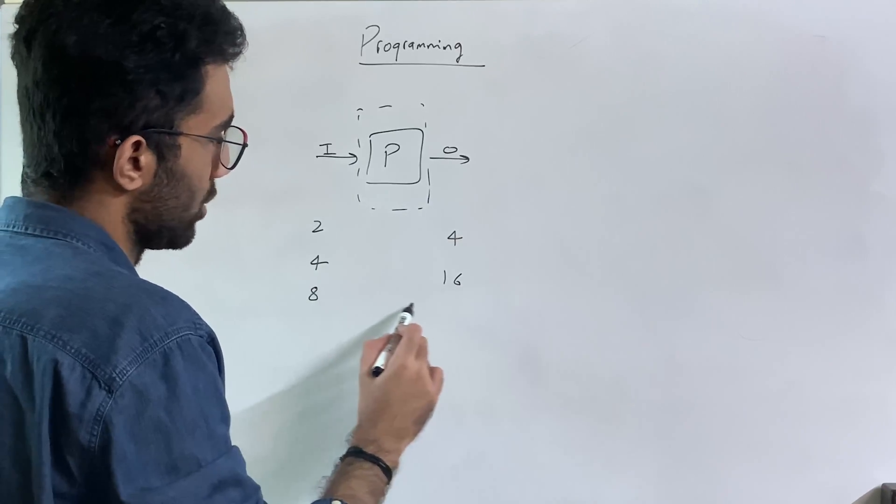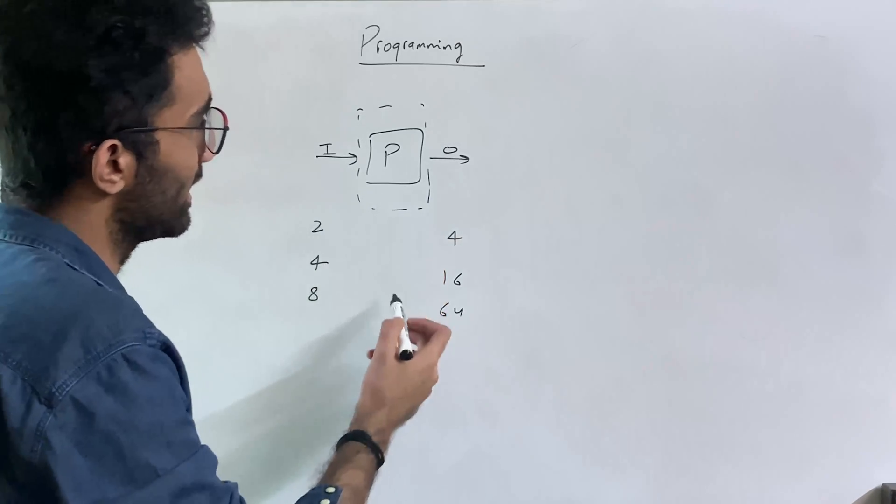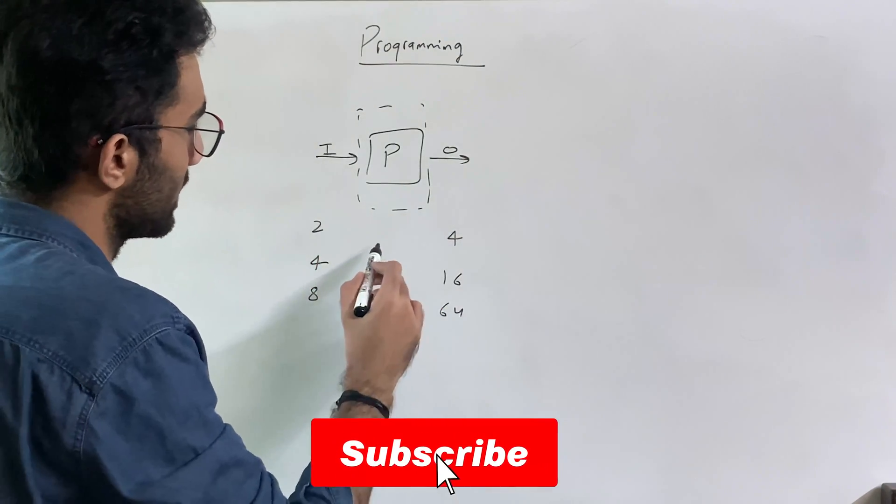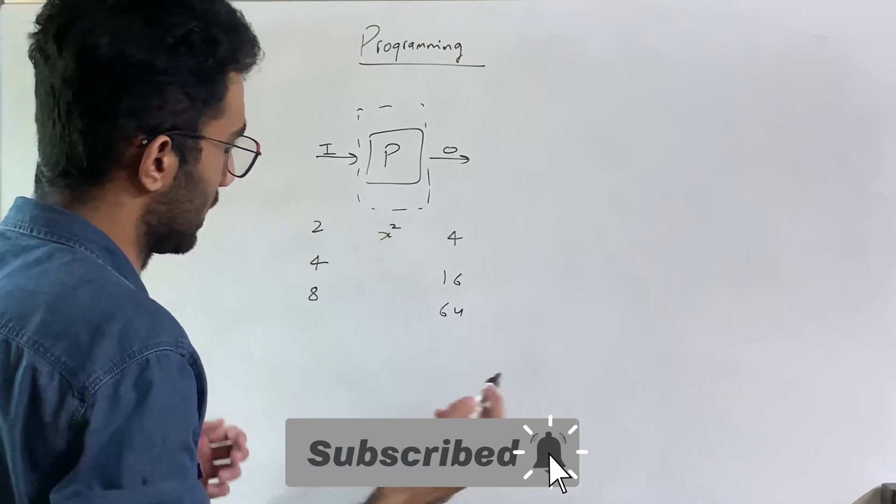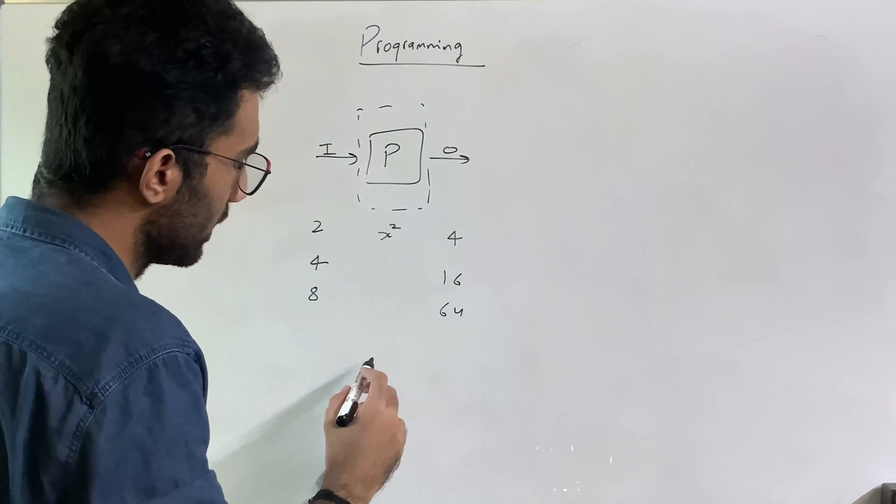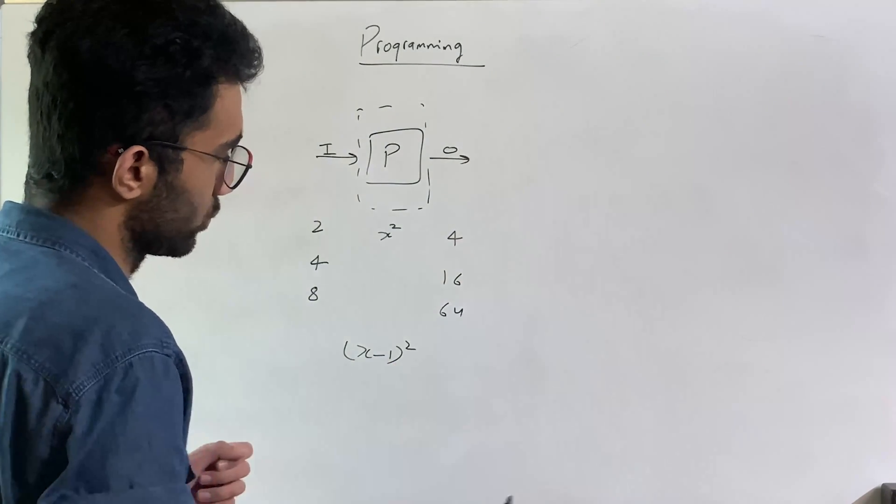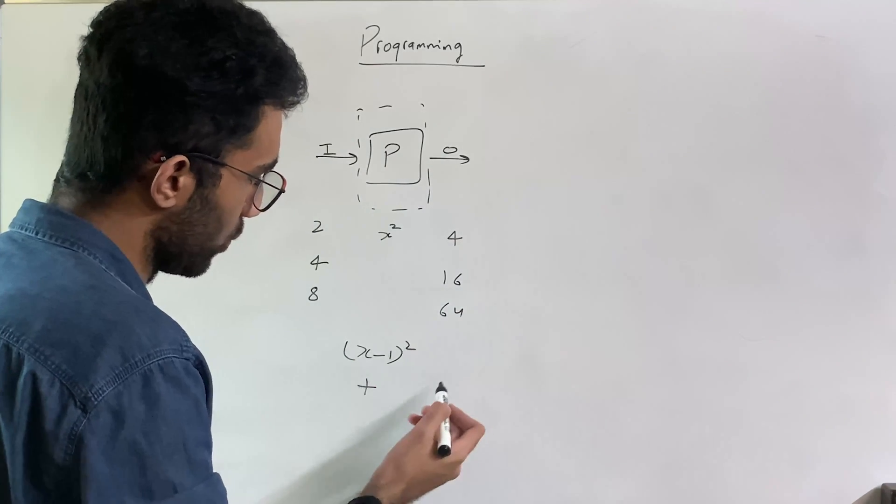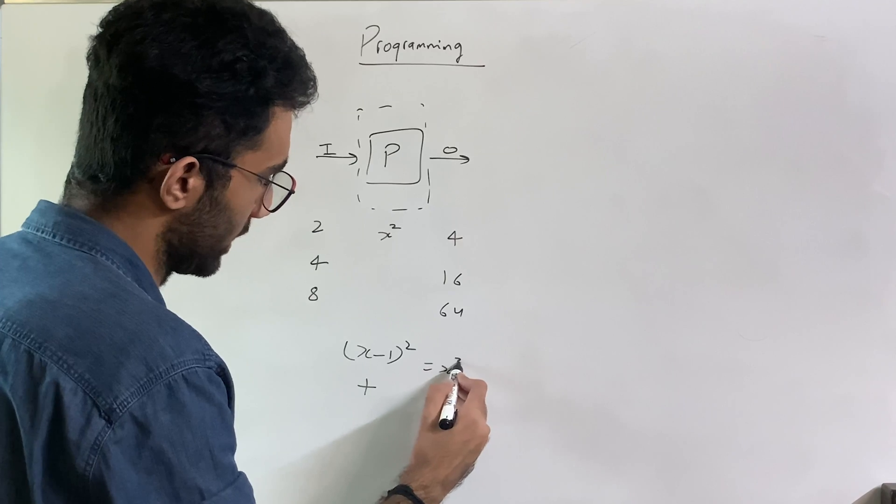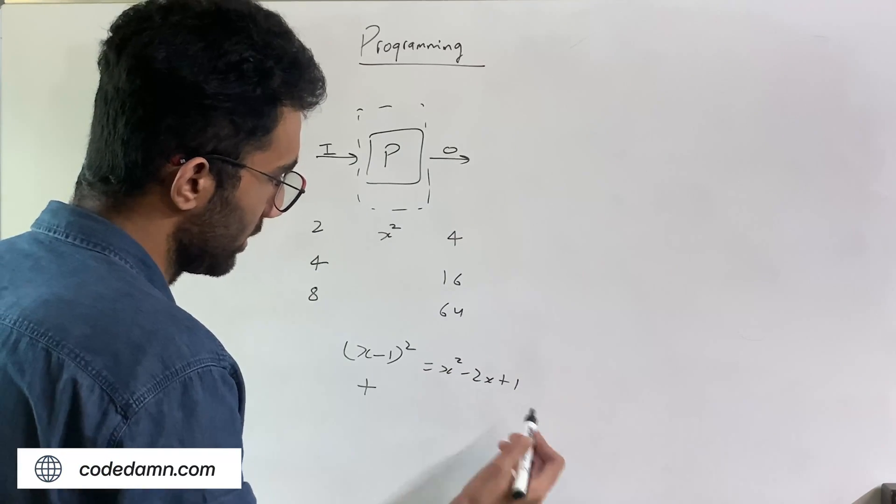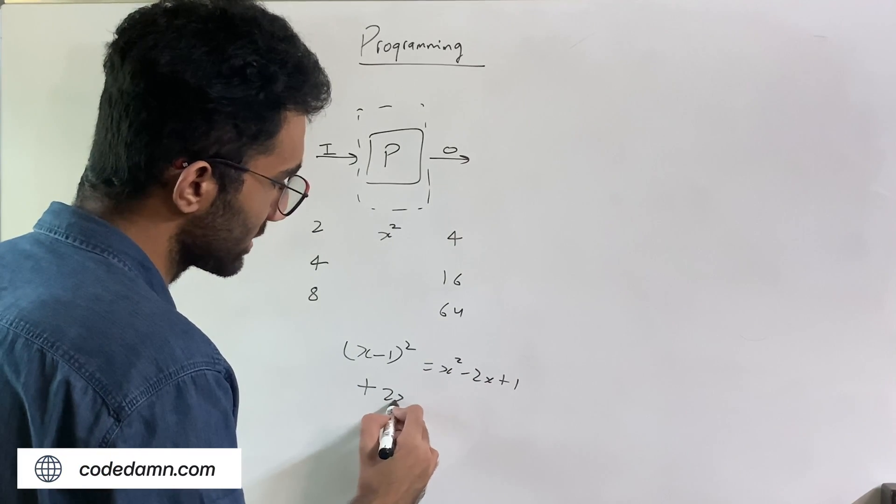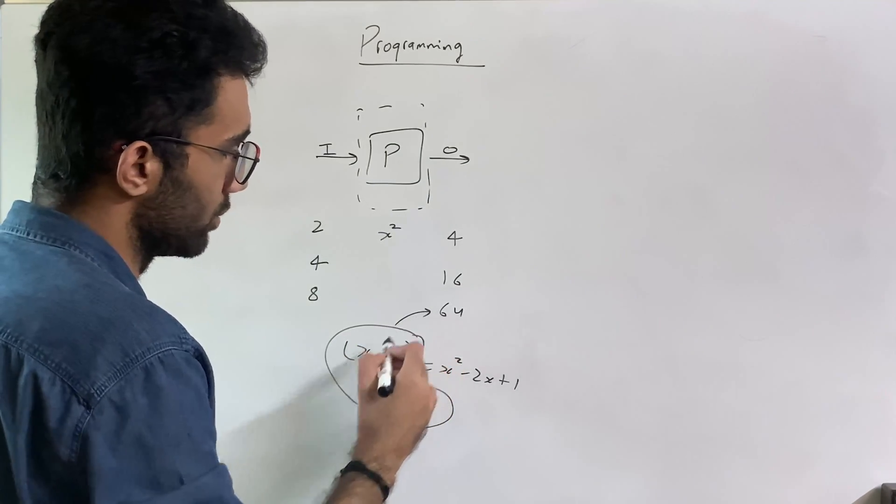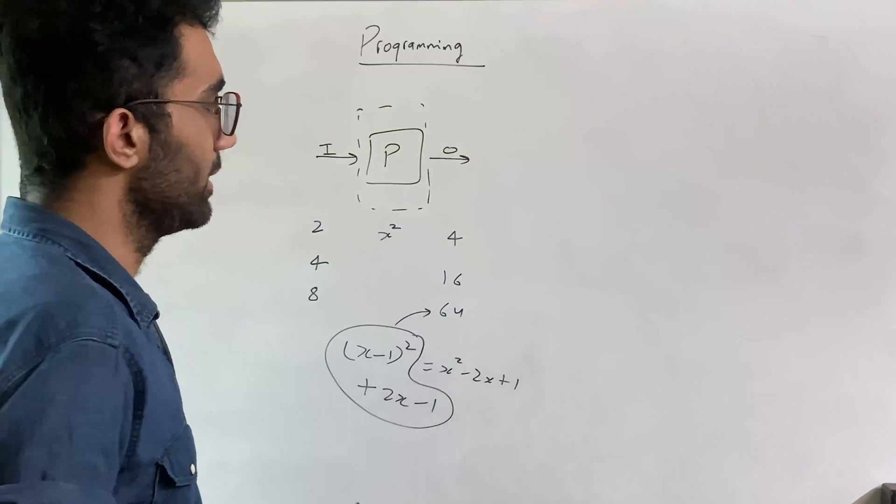You could probably guess what the program is. Just looking at the data, it seems like the program squares the number. But it could very well be squaring x minus 1, which is x² - 2x + 1, and then adding 2x and removing minus 1. So this is also going to give you the same output.